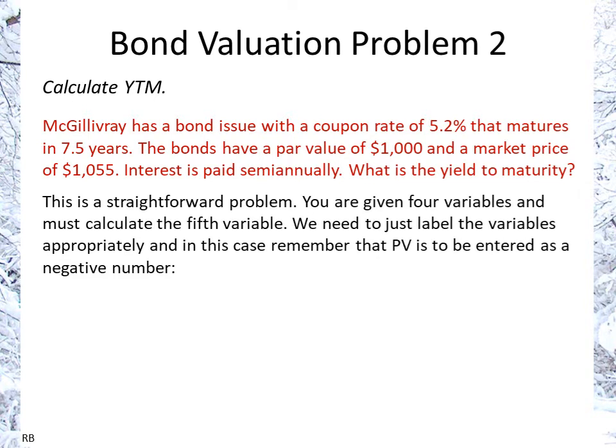This is a straightforward problem. You're given four of the variables and you have to calculate the fifth one. So we just need to label the variables appropriately, and remember that present value is to be entered as a negative number.